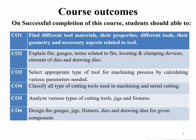He must be able to analyze various types of cutting tools as well as the jigs and fixtures. The last course outcome is that the student should be able to design gauges, jigs, fixtures, dies, and drawing dies for given components. After completing this course, the student must be in a position to design jigs and fixtures for a particular application, and obviously the sheet metal working die and drawing dies for manufacturing a particular component. That is the last course outcome of this particular course, that is tool design.